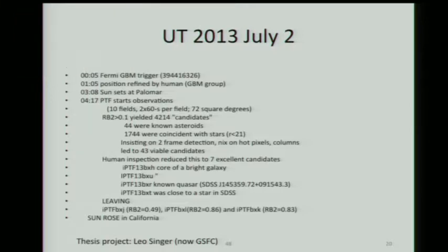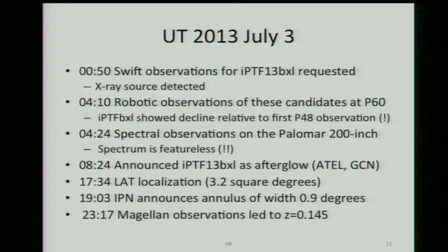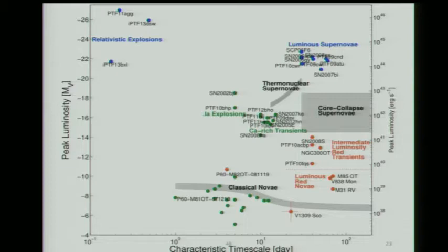In order to do these things, you really need not only all these rapid and reliable software things, you also need a little organization. Here it is. Get the trigger. We have an email sniffer that figures out. Our software kicks in, does this. All the machine learning stuff eliminates all this huge number of candidates down to seven. Sun rose in California. Then we knew what it was because we had Swift. Then we got a spectrum from Magellan and got the redshift. Paper was submitted two weeks later.